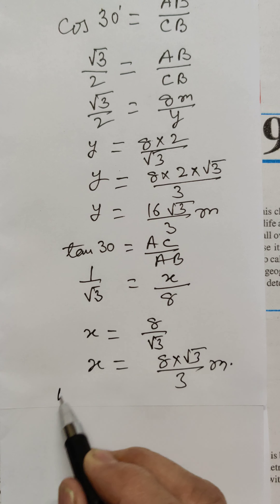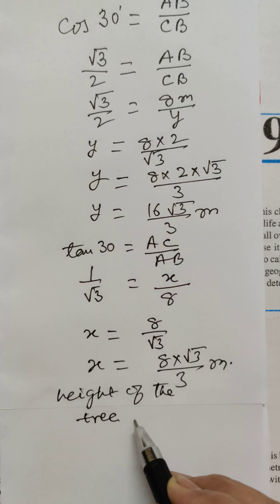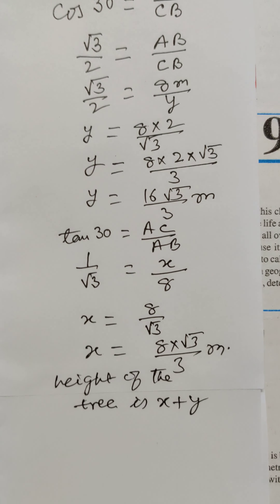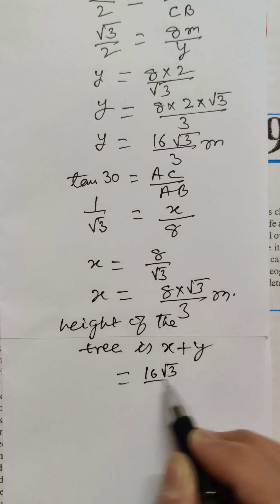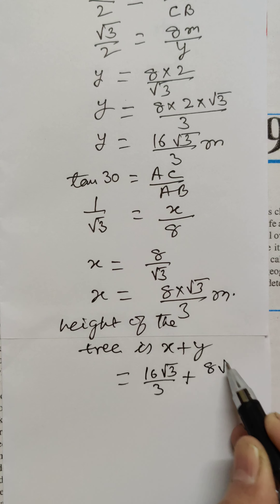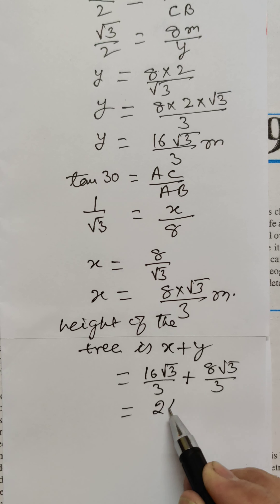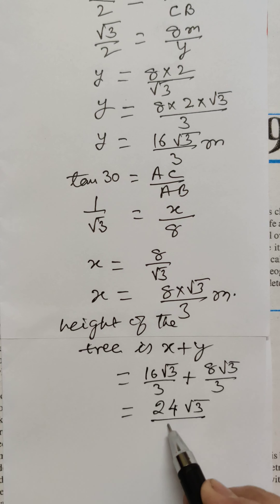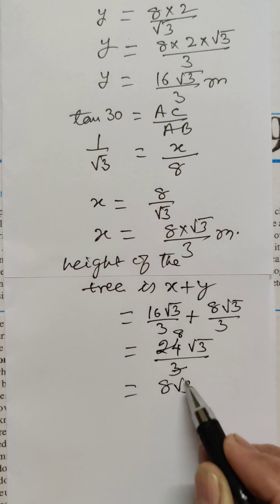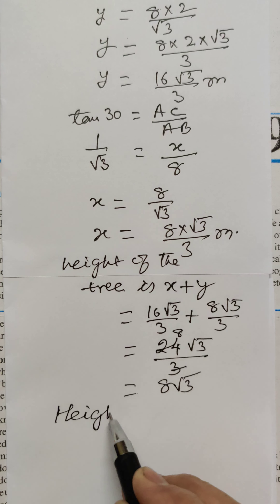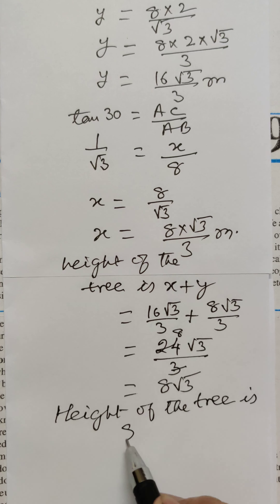The height of the tree is x + y = 16√3/3 + 8√3/3 = 24√3/3 = 8√3 meters.